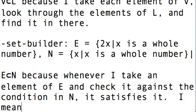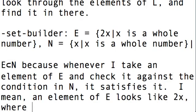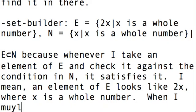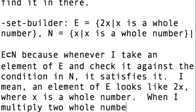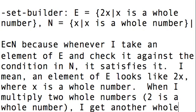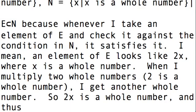Well, E is a subset of N because whenever I take an element of E and check it against the condition in N, it satisfies it. If an element of E looks like 2X where X is a whole number, when I multiply two whole numbers, and 2 is a whole number, I get another whole number.